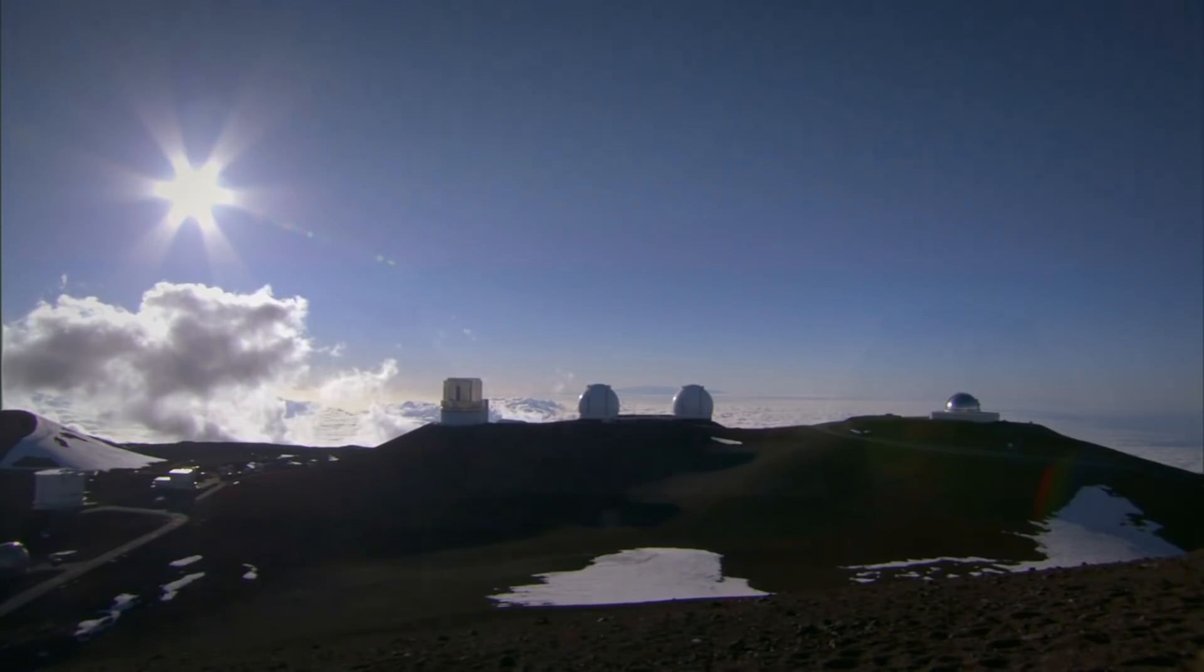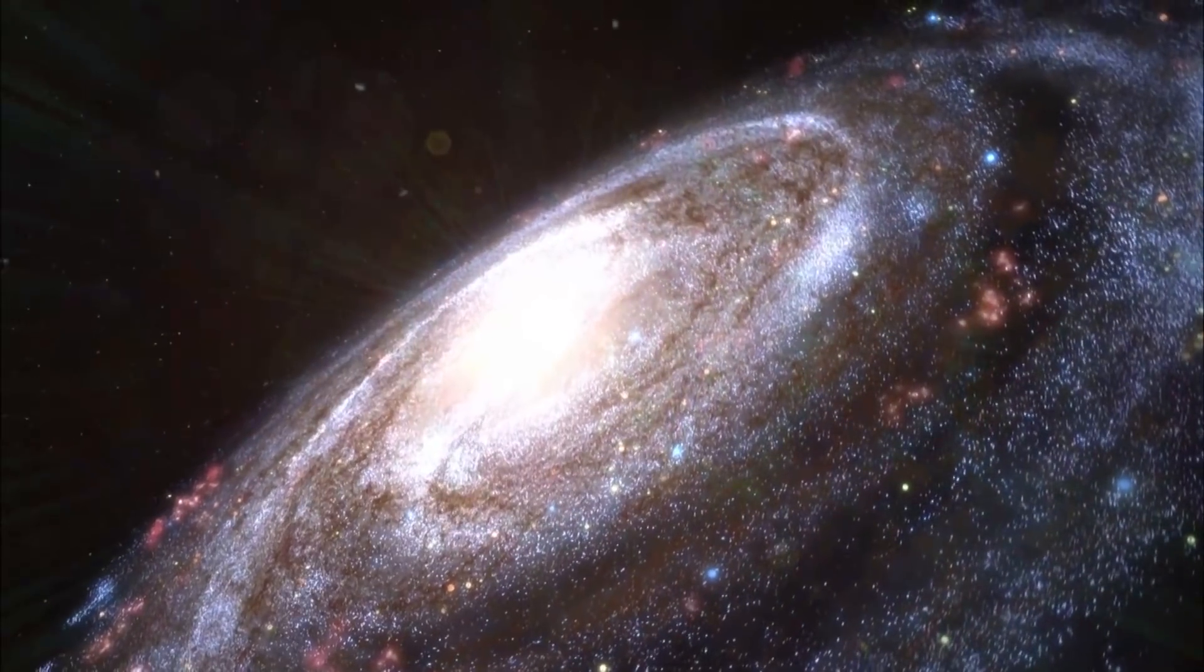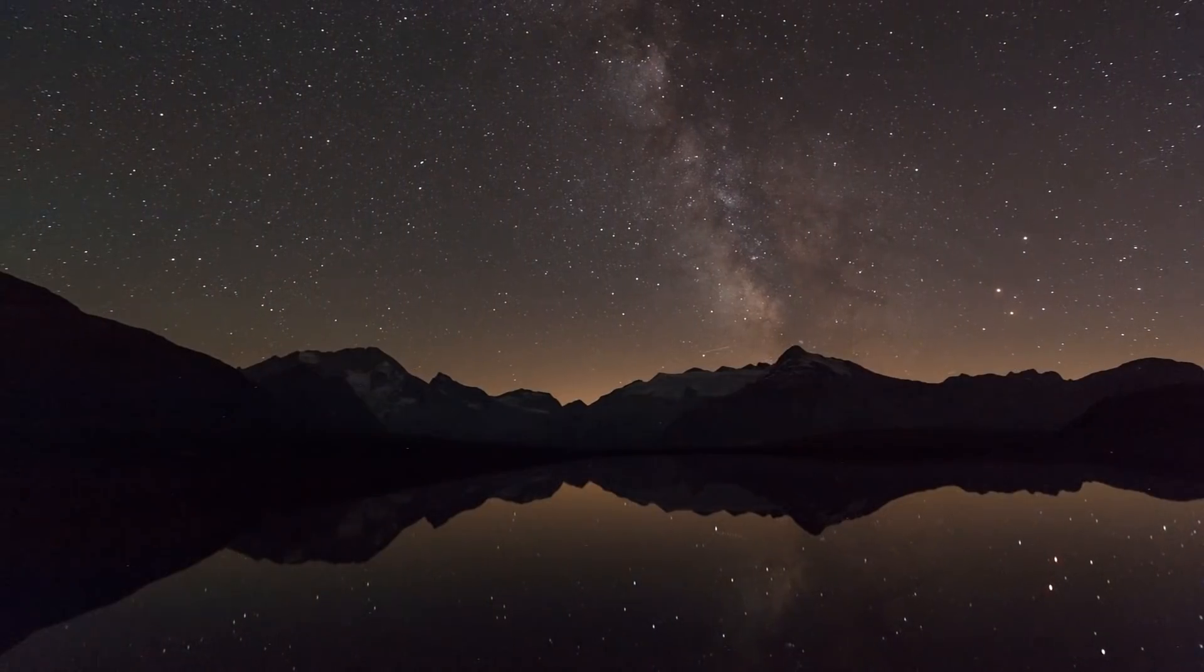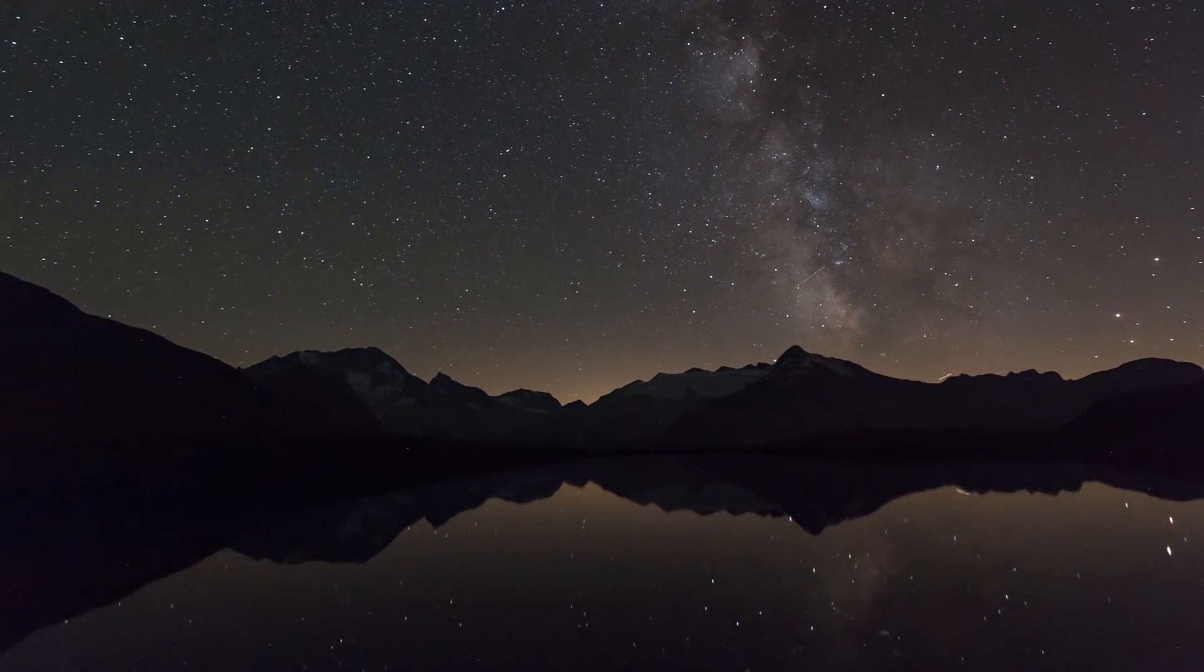What is the farthest astronomical objects humans can see? At about 2.53 million light years from Earth stands the Andromeda Galaxy. It's technically the farthest object visible to a naked human eye in the sky.